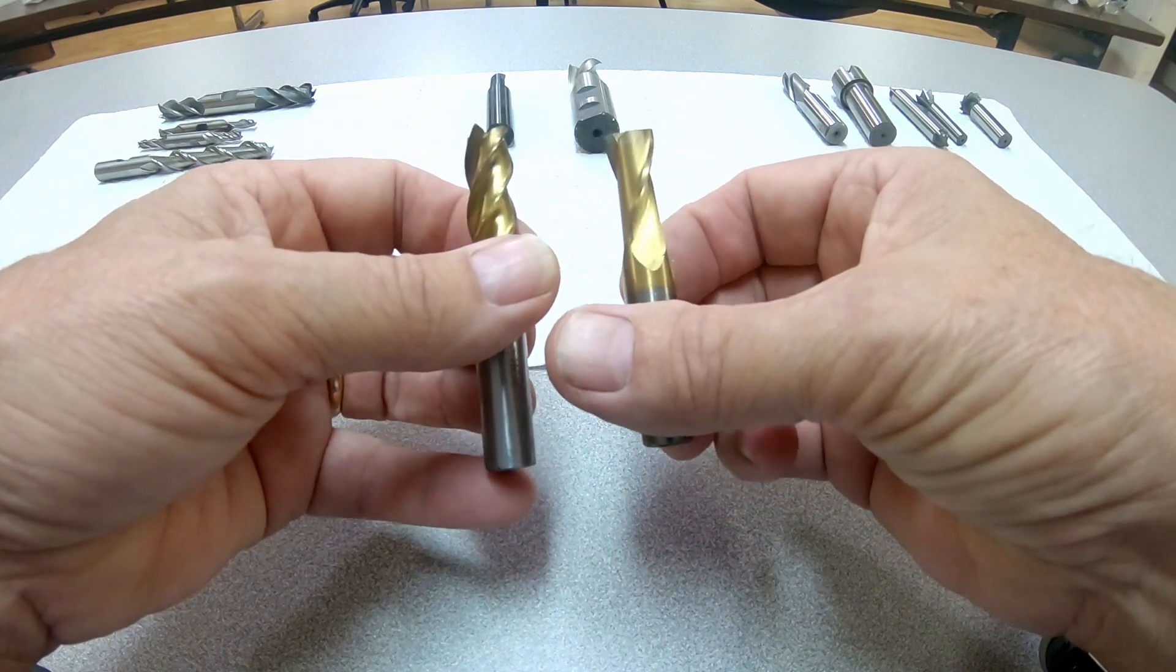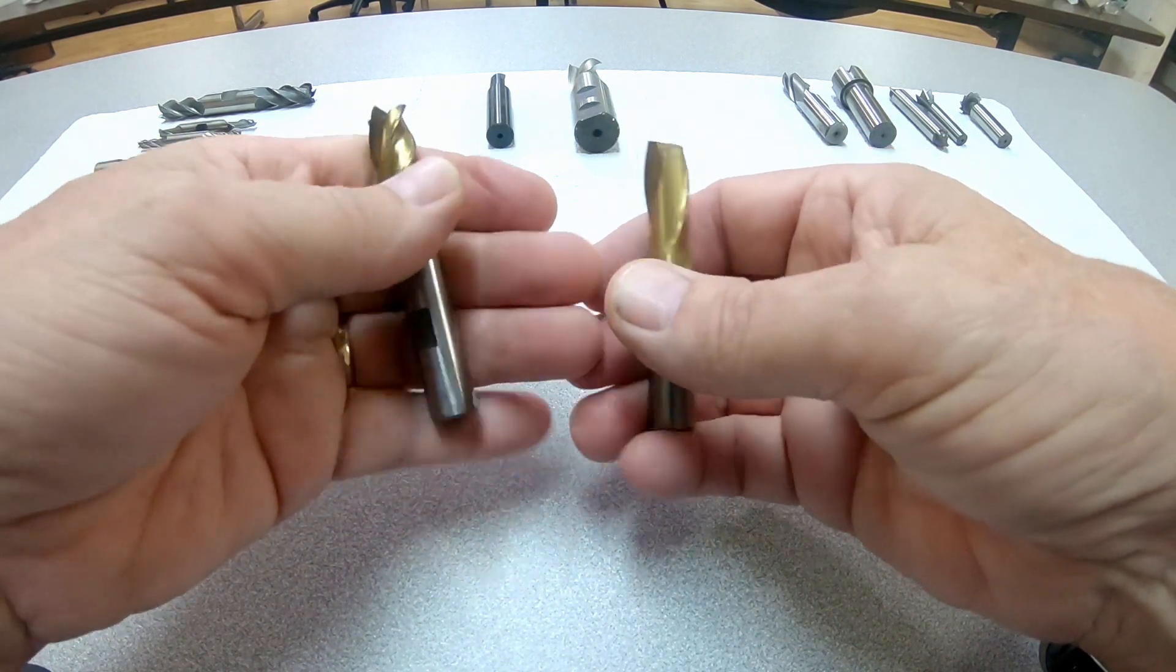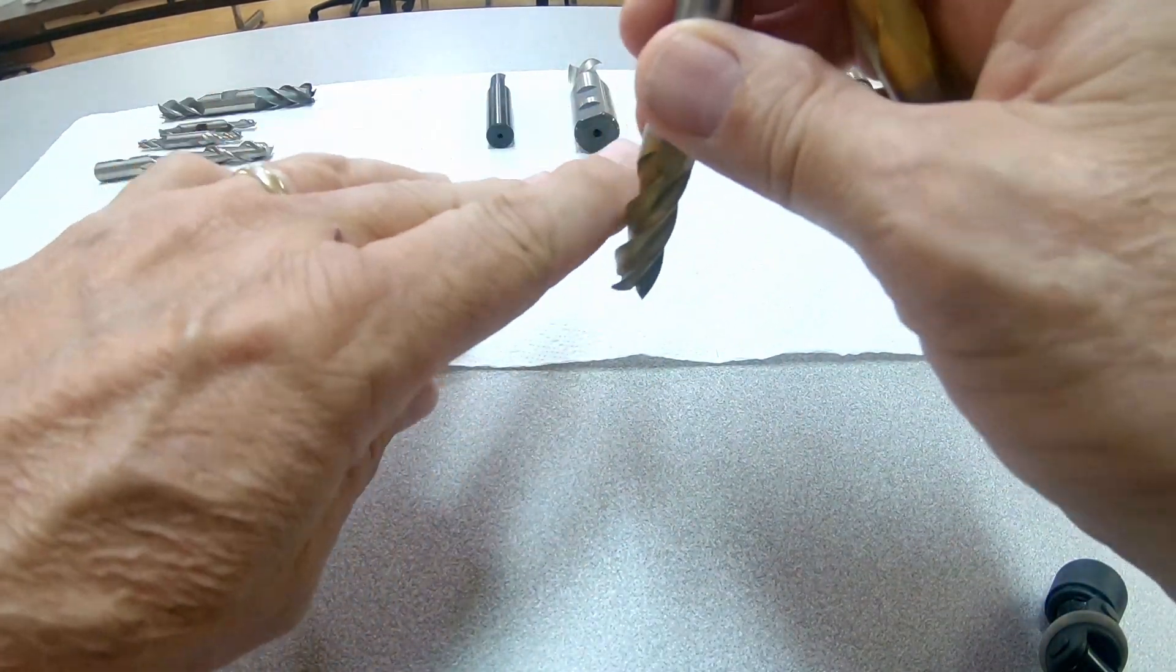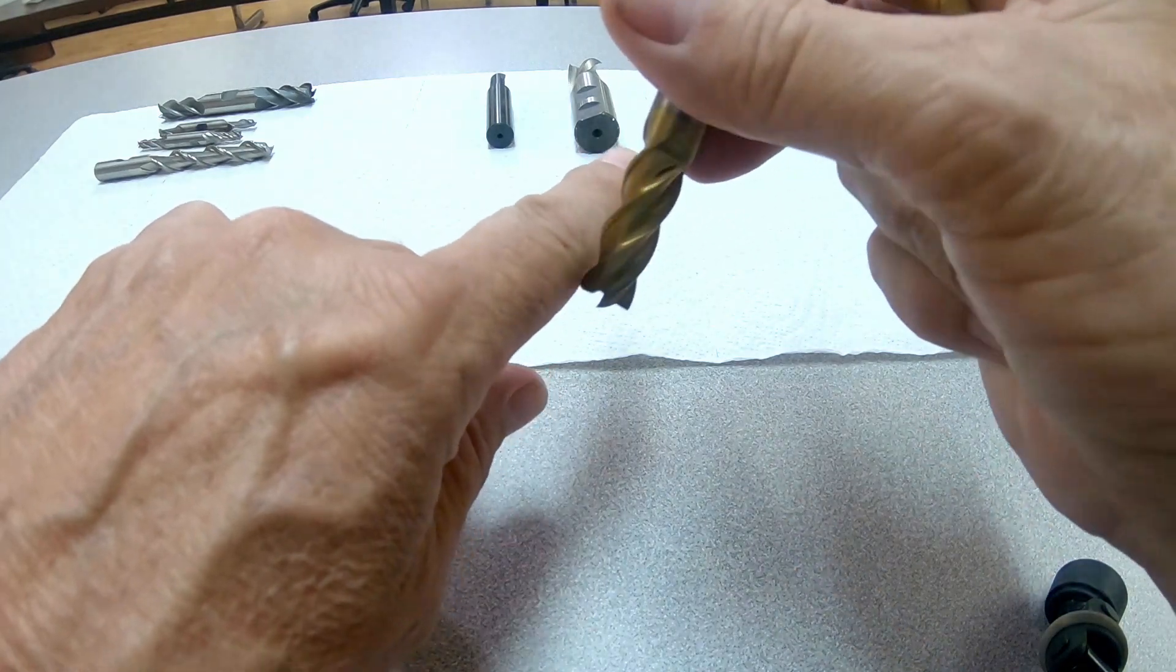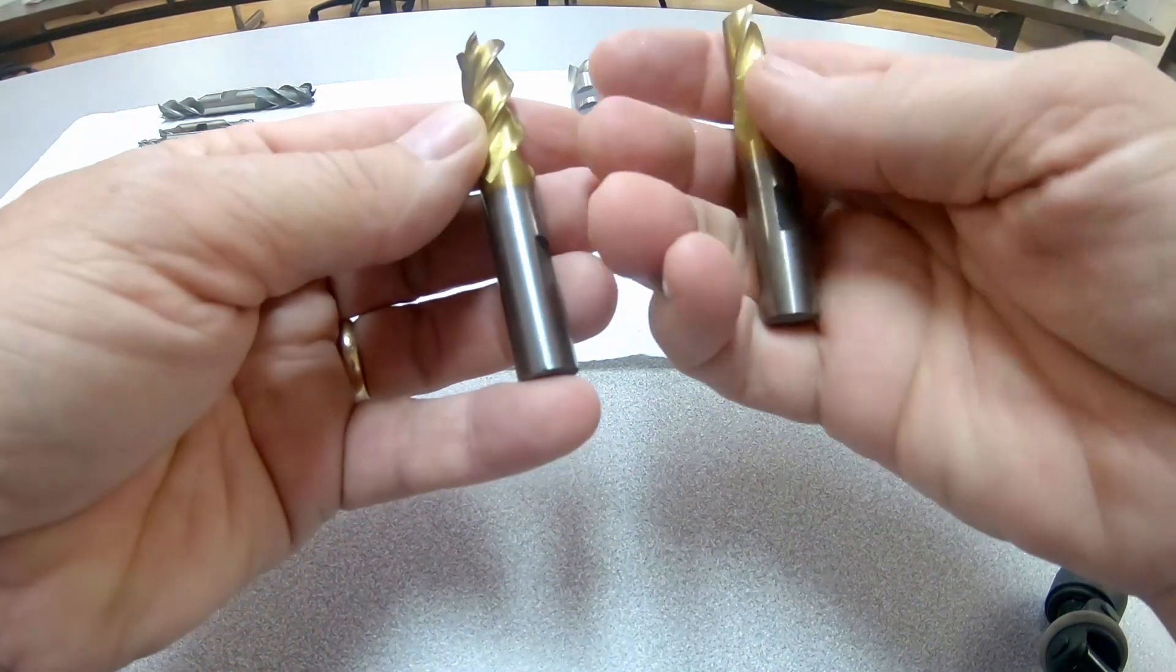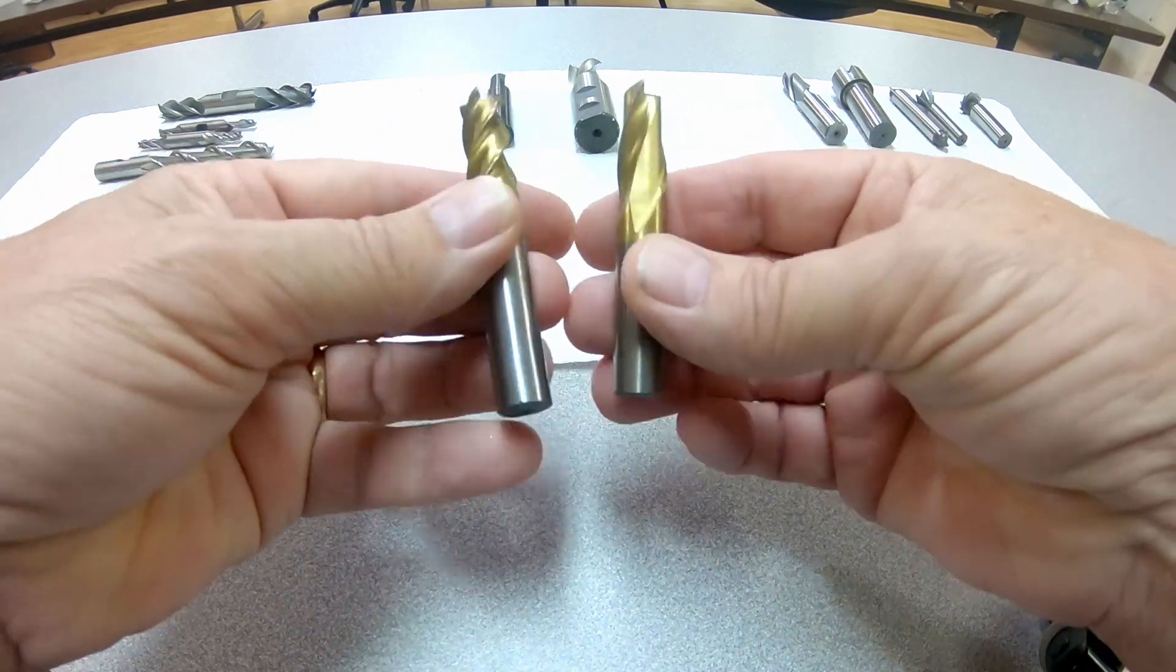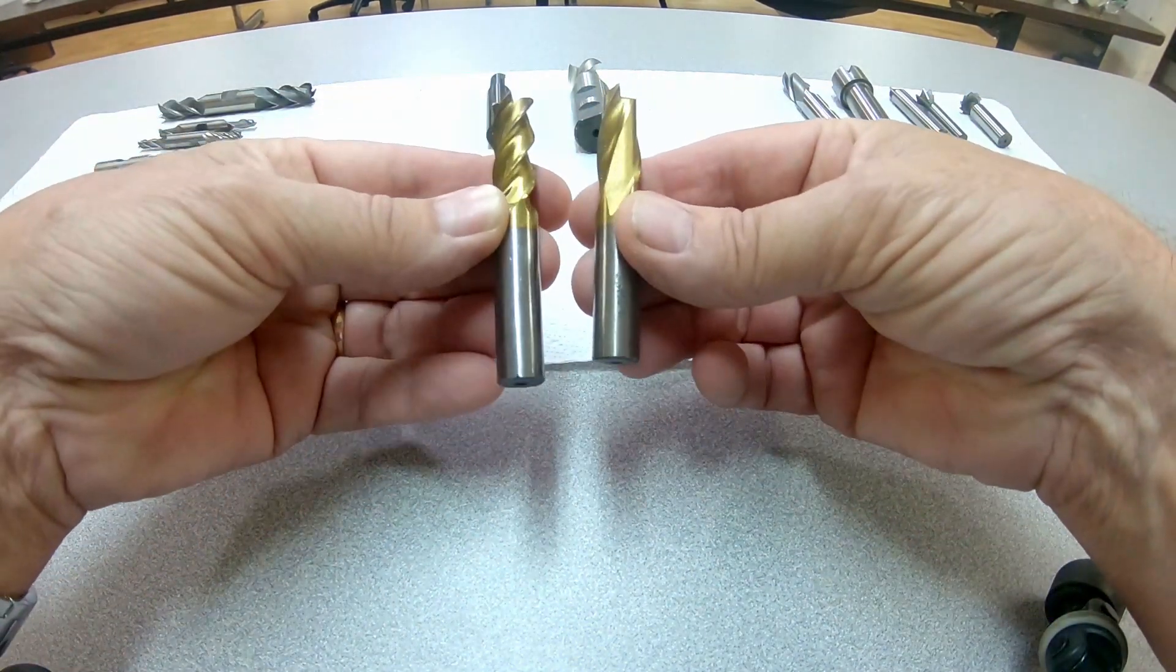So anyway, four flutes are great if you're going to, even on aluminum, surface the edge of something where you have a lot of chip clearance out here. They make a very fine cut because the four flutes will tend to make a finer cut. These are single-ended end mills.